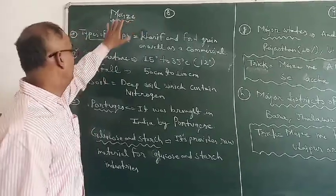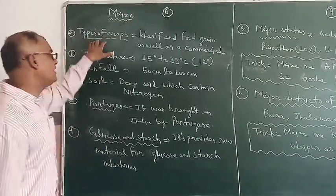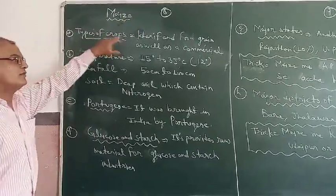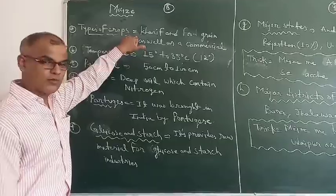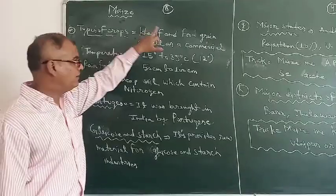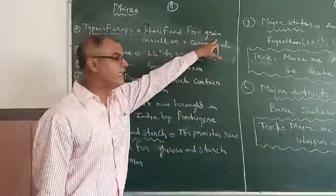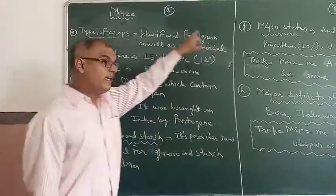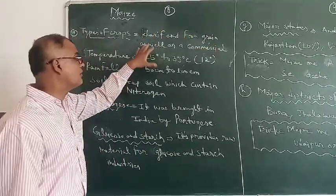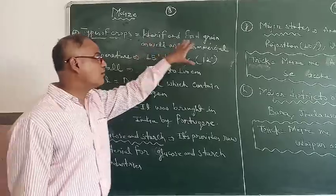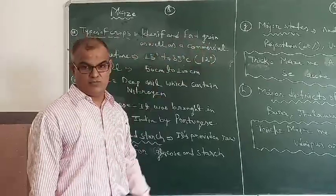Maize is three types of crops. It is a Kharif crop. It also comes under the food grain crops, and it also comes under the commercial crops.